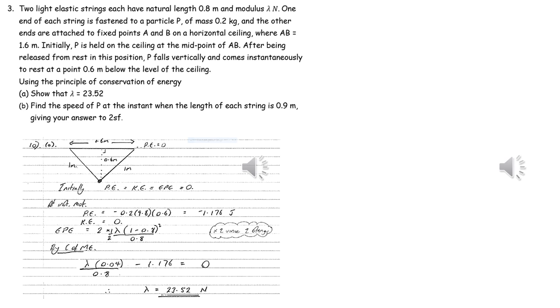In part A, we're going to use conservation of mechanical energy. We can let the zero PE level be at the initial position. There's no kinetic energy and no elastic potential energy, hence there's no energy initially. When it's at instantaneous rest, we can work out expressions for the elastic potential energy and the gravitational potential energy — which will be negative because it's below our zero PE level — and there's zero KE because it's instantaneously at rest. This enables us to create an equation and work out the value of λ.